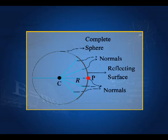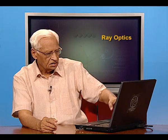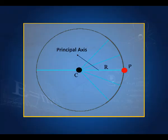Now let us look at reflection from curved surfaces. The laws of reflection remain valid. For a spherical mirror — which is just part of a complete sphere — all radii from the center to the surface are normals. The geometrical center of this reflecting surface is called the pole P, and the radius of this spherical surface is called the radius of curvature. The line joining the pole P with the center of curvature is the principal axis.